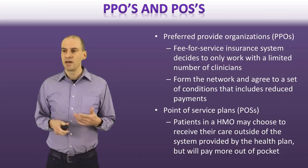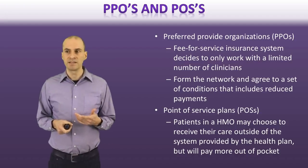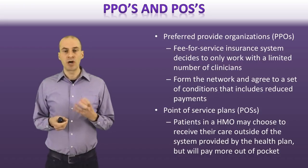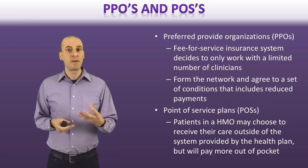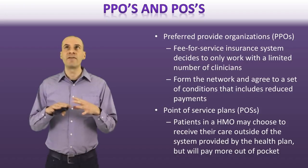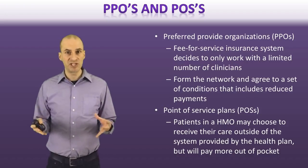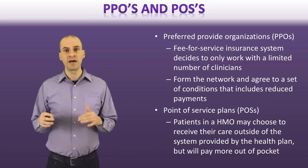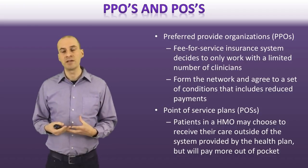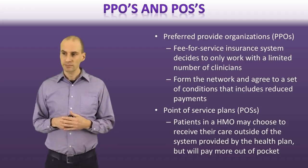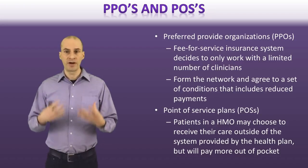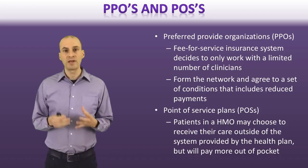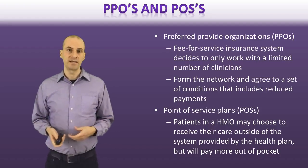Then we have PPOs and POSs — Preferred Provider Organizations and Point of Service plans — which are ways of moderating the fee-for-service and HMO structures. PPOs have a fee-for-service approach where they allow people to go outside their network, but they have a set of preferred providers who will be cheaper for people within that PPO. If people want to go outside, they pay more, which helps ensure quality. Point of Service plans are where people are in HMOs but are allowed to go to providers outside those HMOs for an additional fee, instead of only being able to use providers within that HMO.